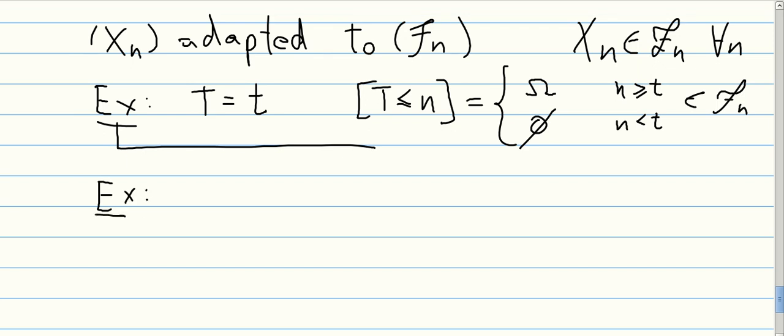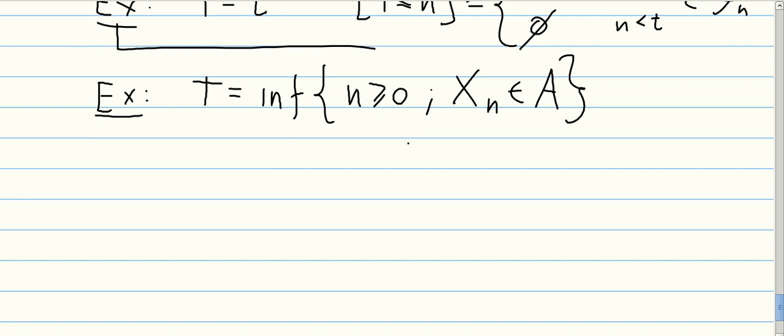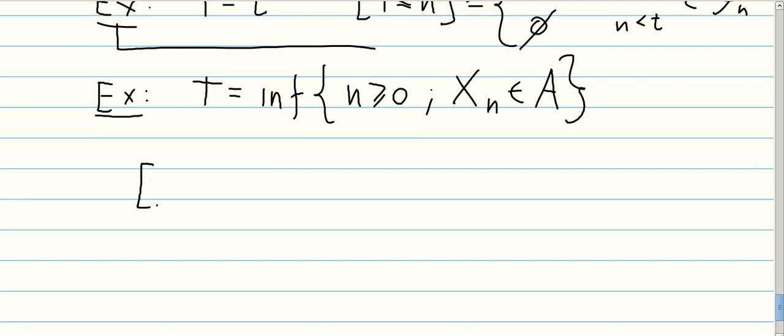The second example, T is going to be the first time such that something happens with X. XN belongs to A, for example. Why is this a stopping time? So let's look at the event T smaller or equal than N. This can be written exactly as X0 belongs to A. Because if X0 belongs to A, T is 0. So it's smaller or equal than N.